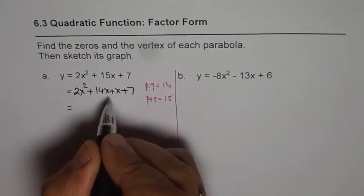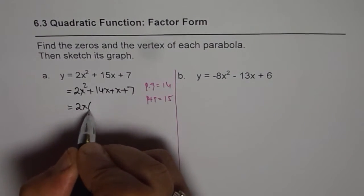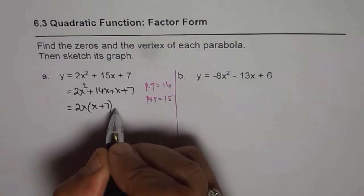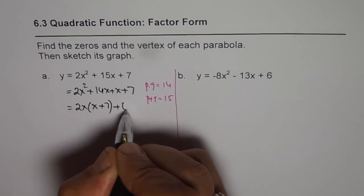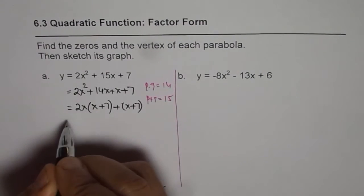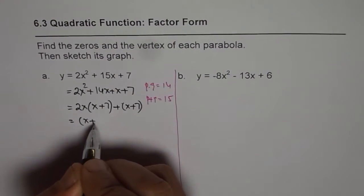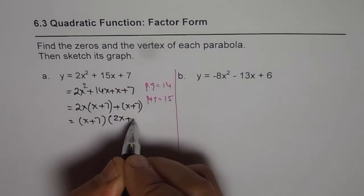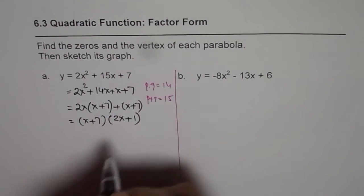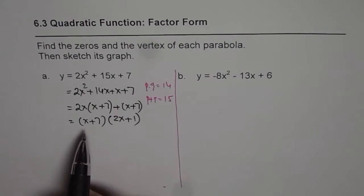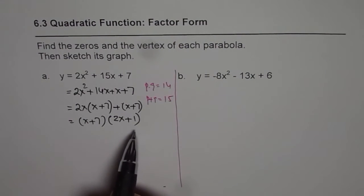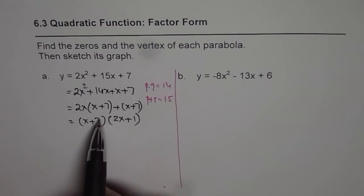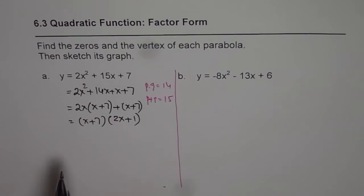From the first two terms we take 2x common to get x plus 7, and the remaining term is also x plus 7. We can then factor out x plus 7, giving us the factored form. This is the factored form derived from the standard equation.